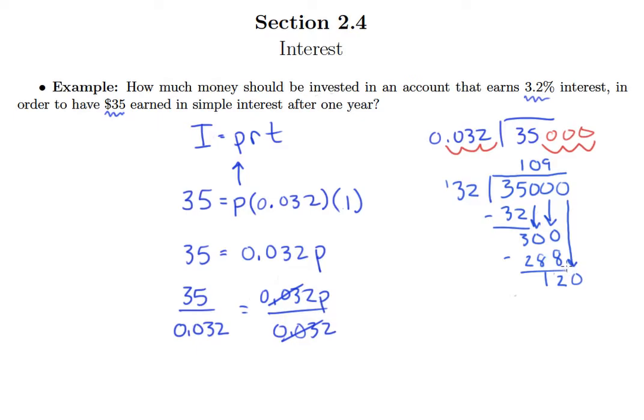And 32 goes into 120. Let's see that would be 3 times. So that's going to be 96. And so that's going to give me a remainder of 24. So we'll add a decimal point and a 0, drop it down. 32 goes into 240.